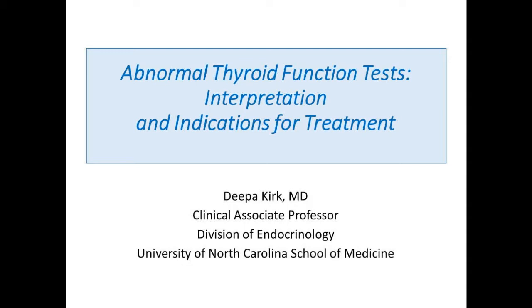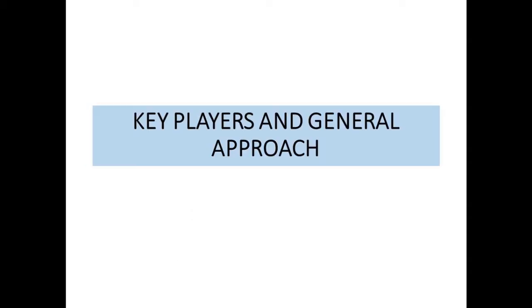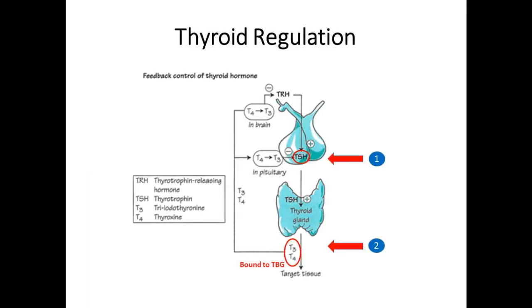So key players — what are the things that we can test in thyroid dysfunction? I don't want to induce too much PTSD talking about feedback loops, but the few things we do test are shown here. The anterior pituitary is where TSH is produced, and that thyroid stimulating hormone then goes to the thyroid to cause production of thyroid hormones, both T3 and T4. T4 is mainly what your thyroid gland makes — about 90% of what comes out is thyroxine or T4, thyroid hormone with four iodine atoms. About 10-20% is the more active form, T3, with three iodine atoms.